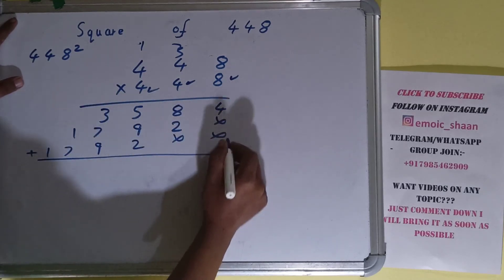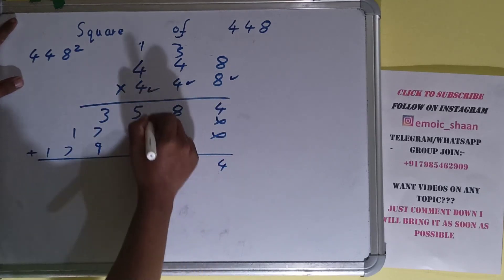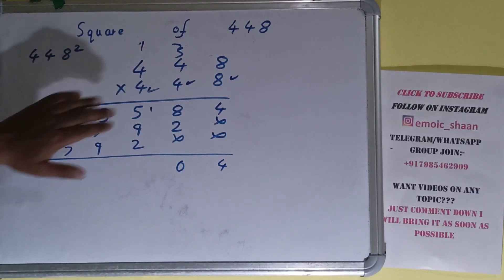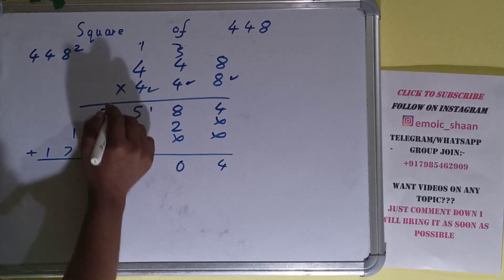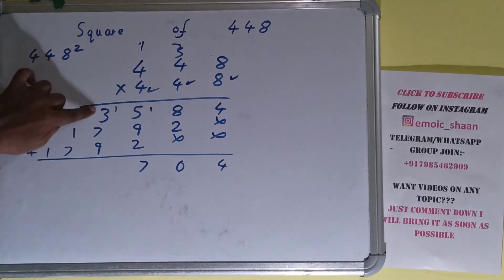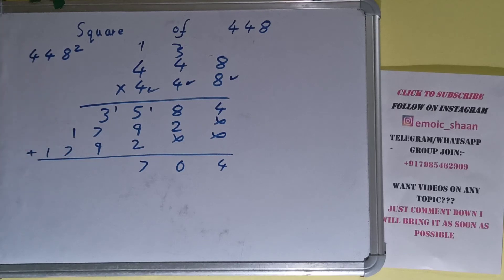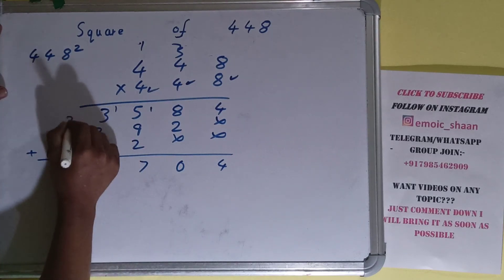Add everything carefully. 4, 0, 1 here. 6 plus 9 is 15, 16, 17, 1 here. 4 or 3, 1 plus 3 is 4, plus 7 is 11, plus 9 is 20, 0 here, 2 here.